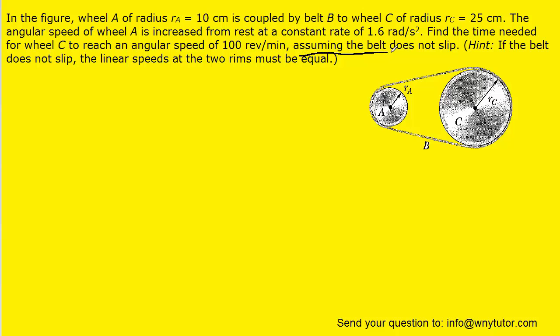The question notes that the belt does not slip around either of the wheels, and in that situation it turns out that any point on wheel C is going to have the same tangential acceleration as any point on wheel A.